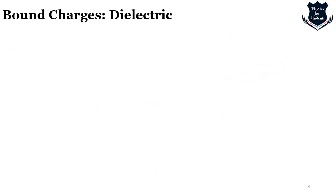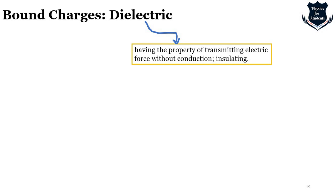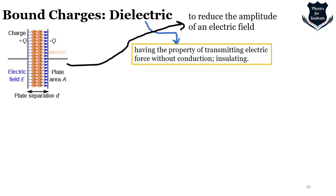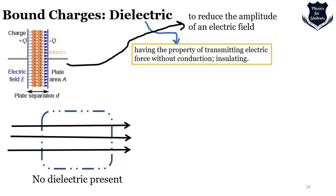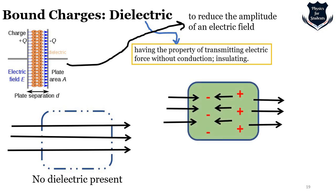Now, a question arises: does this mean the form of Gauss's law is only valid in vacuum? No — Gauss's law is written in general and applies to electric fields within dielectrics as well. A dielectric is something having the property of transmitting electric force without conduction — it forms a kind of insulation. A dielectric plate placed in an external field reduces the amplitude of the electric field. Without a dielectric, field lines pass through freely.